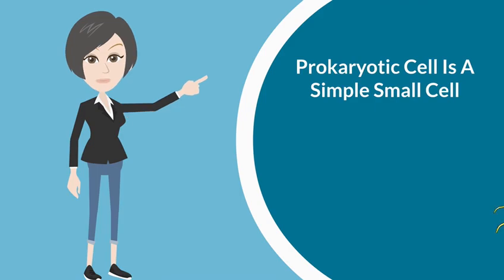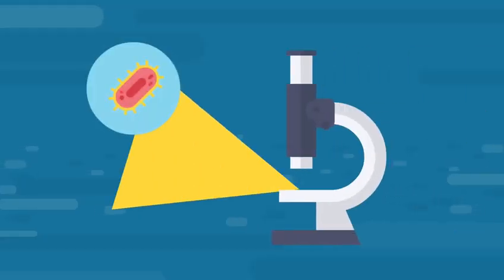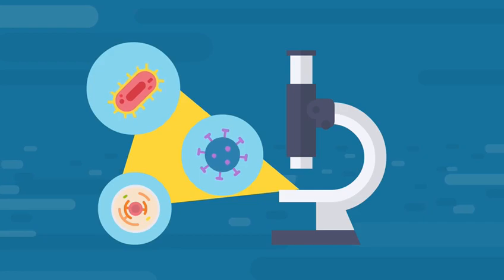Prokaryotic cells. The prokaryotic cell is a simple small cell that contains no nucleus. Organisms made from prokaryotic cells are very tiny, such as bacteria.